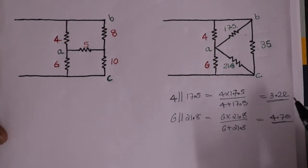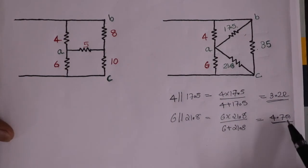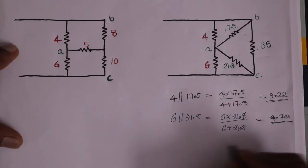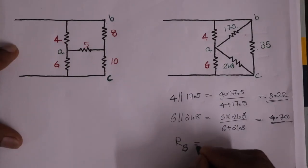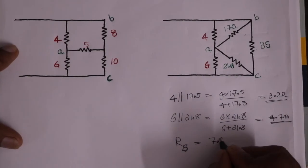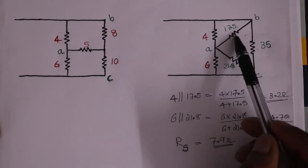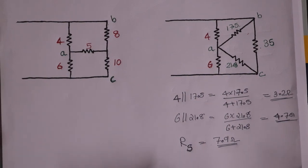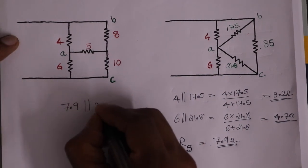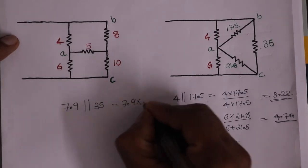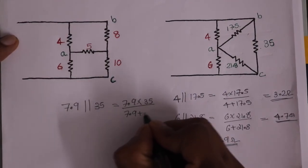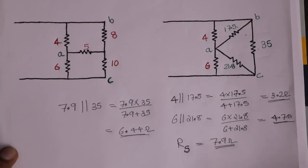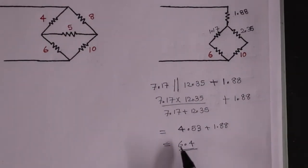Now we have these values: 3.2 and 4.7 add up, and this value is 7.9 ohms. So we have 7.9 ohms in parallel with 35 ohms. 7.9 into 35 divided by 7.9 plus 35, which gives 6.44 ohms. So we have an equivalent resistance of 6.44 ohms. We got the same circuit value — equivalent resistance is 6.41 ohms — confirming both methods give the same result.